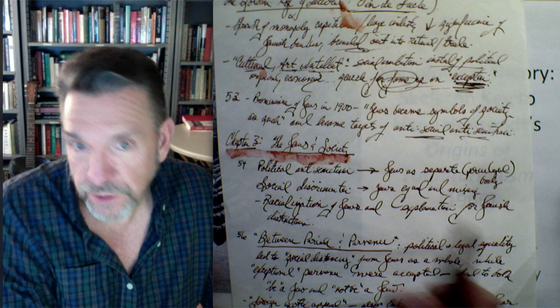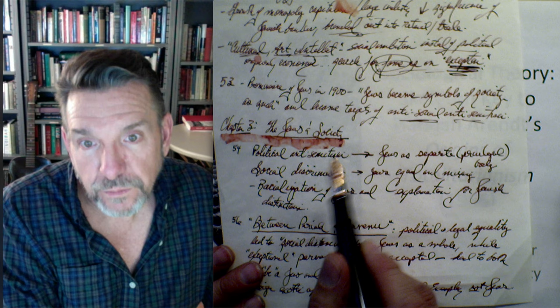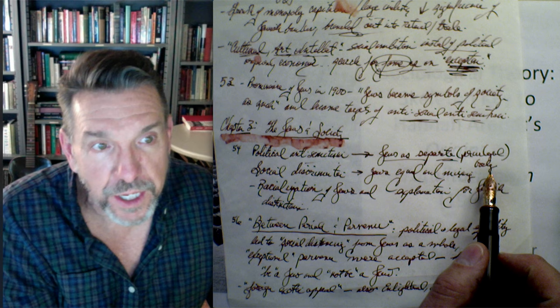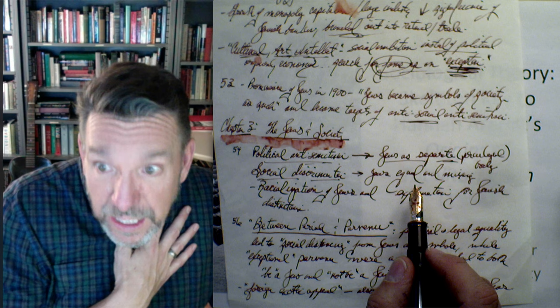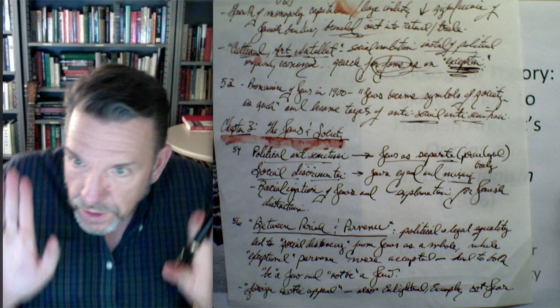Chapter three: 'The Jews in Society.' Page 54: political antisemitism views Jews as a separate and even privileged body of people. This is distinguished from social discrimination, in which Jews are viewed as equal people who are mixing in and therefore need to be actively discriminated against.